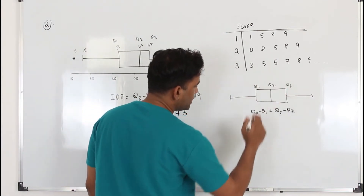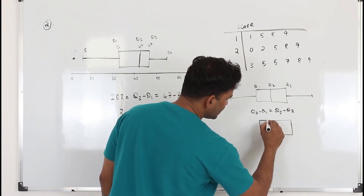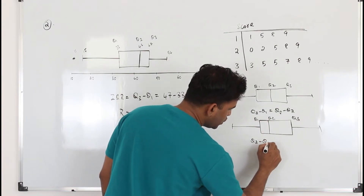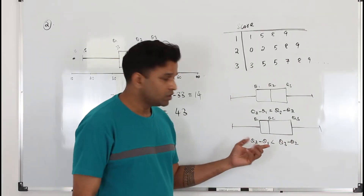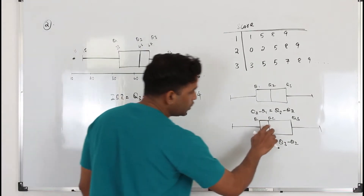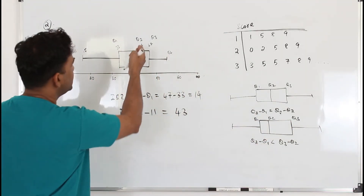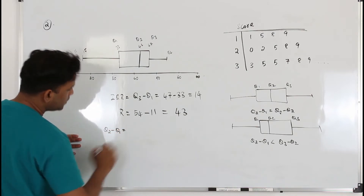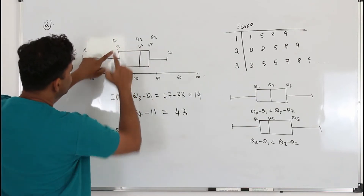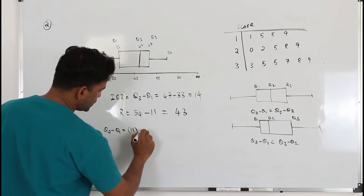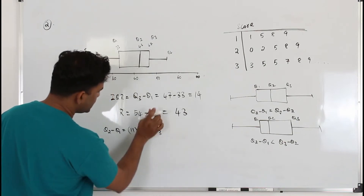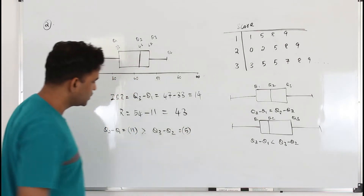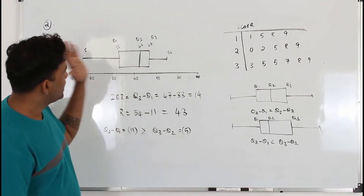If Q2 is closer to Q1 than to Q3, then Q2 minus Q1 is smaller than Q3 minus Q2, and the data is positively skewed. In our case, Q2 minus Q1 equals 42 minus 33, which is 9 — wait, that's 9 — but Q3 minus Q2 is 47 minus 42, which is just 5. Since Q2 minus Q1 is bigger than Q3 minus Q2, the data is negatively skewed.